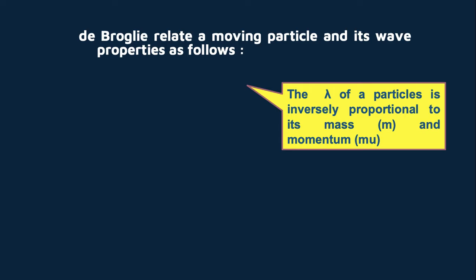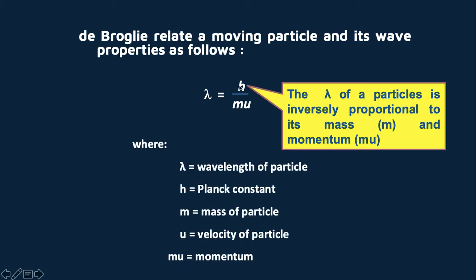De Broglie relate a moving particle and its wave properties as follows: the wavelength equal to H over M u. So lambda, the wavelength of particle equals Planck constant H over mass of particle M u, the velocity of particle. M u is the momentum. So the wavelength of particle is inversely proportional to its mass and momentum.